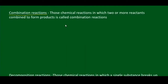Now if we look at this example: 2H₂ + O₂ gives 2H₂O. In this reaction, you are observing that there are two reactants — one is Hydrogen gas and the second is Oxygen gas — and they are combining to form water.